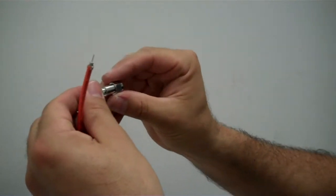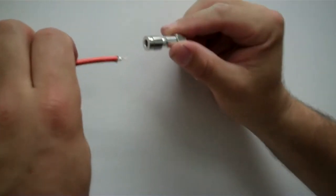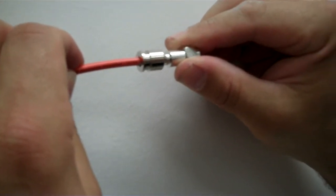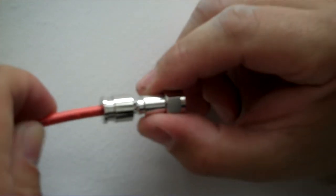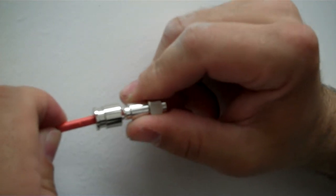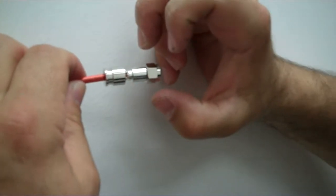Then what we want to do, take your compression connector and slide it in. You got a little window there, and you want to continue to push through until you see the PVC jacket and the braid go in.